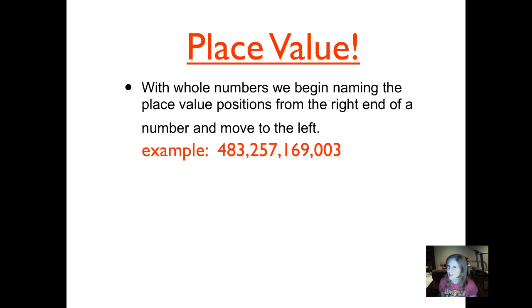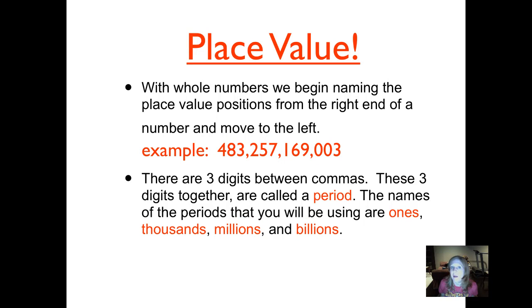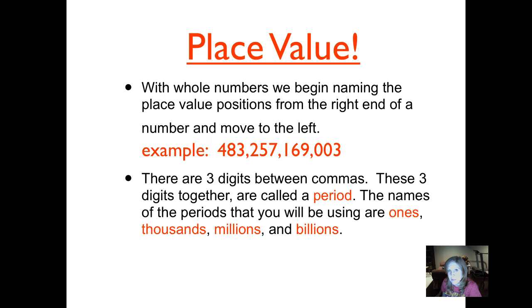Looking at that number, there are 3 digits separated by commas. Starting from the right end and moving left: ones, tens, hundreds, then a comma. Every 3 digits there's a comma. Each set of 3 digits between commas is called a period, and we name those periods. The first period, 003, is the ones period. Then we move to the thousands period, then the millions period — 257 is in the millions period — and 483 is in the billions period. We'll be using those names a lot when identifying where numbers are.